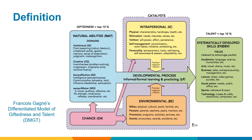Gagné's differentiated model of giftedness and talent is an internationally recognised model used by the Western Australian Department of Education as the definition that underpins their gifted policy. Gagné defines the term gifted as anyone that falls into the 90th percentile and above on a standardised assessment — that is, the top 10% of the population. Giftedness designates the possession and use of outstanding natural abilities, called aptitudes, in at least one ability domain. Talent designates the outstanding mastery of systematically developed abilities, called competencies — that is, knowledge and skills — in at least one field of human activity.